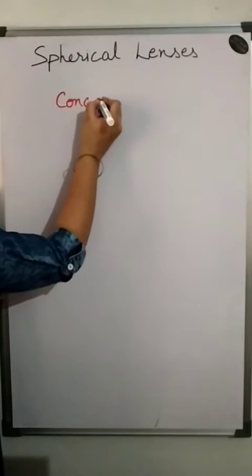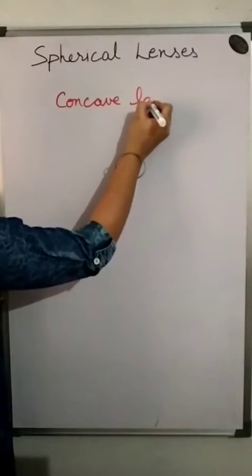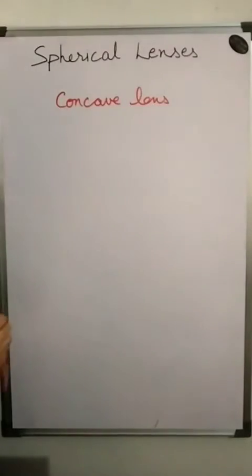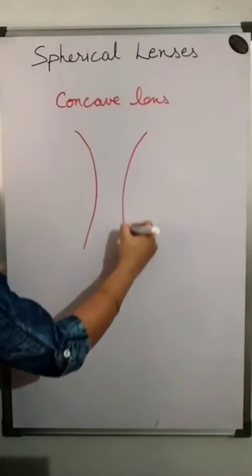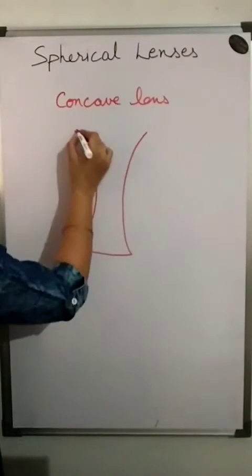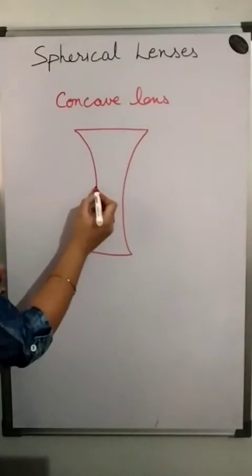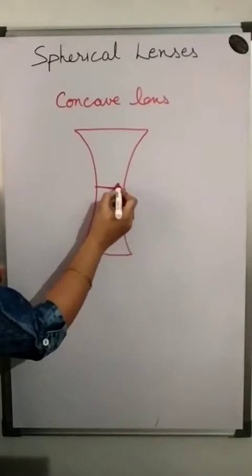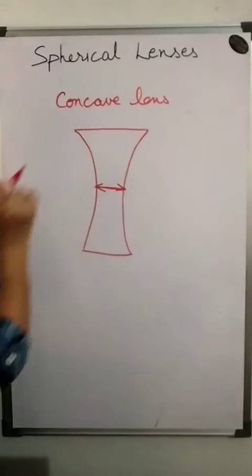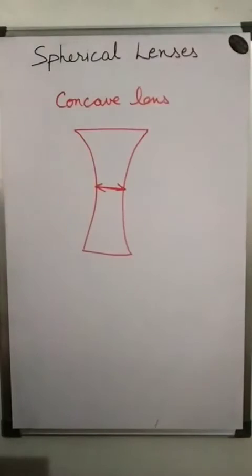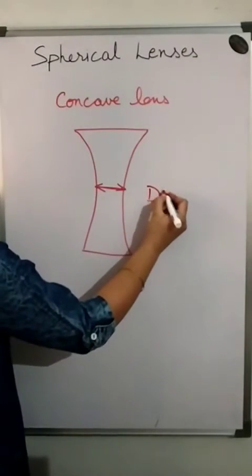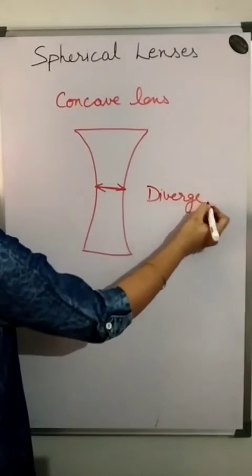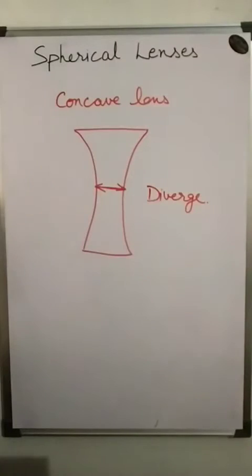Now, the concave lens. Concave lenses are thinner in the middle and thicker at the edges — just see, thinner in the middle and thicker at the edges. This is called a concave lens. They diverge the rays of light.